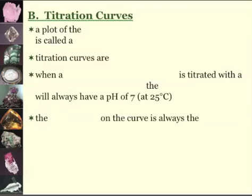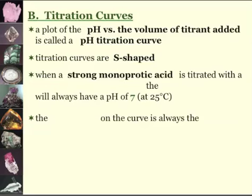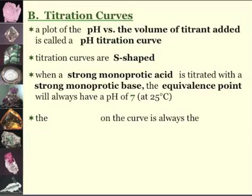Now, titration curves. A plot of the pH versus the volume of the titrant added is called a pH titration curve. The titration curves are S-shaped. When a strong monoprotic acid is titrated with a strong monoprotic base, the equivalence point will always have a pH of 7 at 25 degrees Celsius.